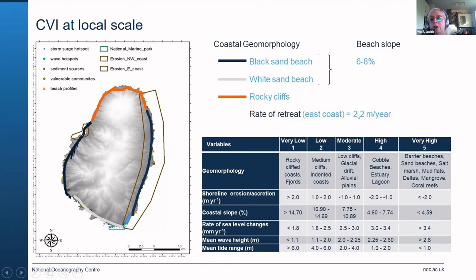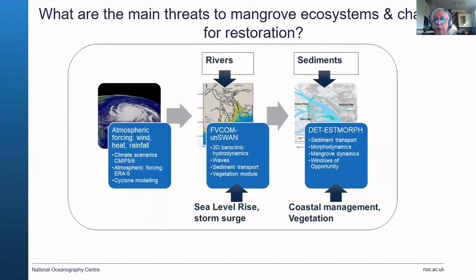The rate of retreat estimated from aerial photographs is about 2.2 meters per year, particularly on the east coast. We can now estimate those vulnerabilities at scale for the whole of St. Vincent. In another project, we've been looking at threats to mangrove ecosystems and challenges for restoration — this applies to the Caribbean as well as the Pearl River Delta in China. The threats are coming from atmospheric forcing, changing climate, sea level rise, and tropical cyclones.